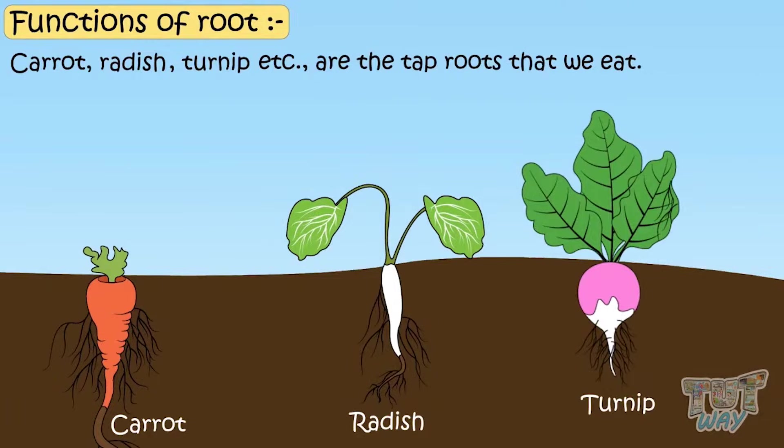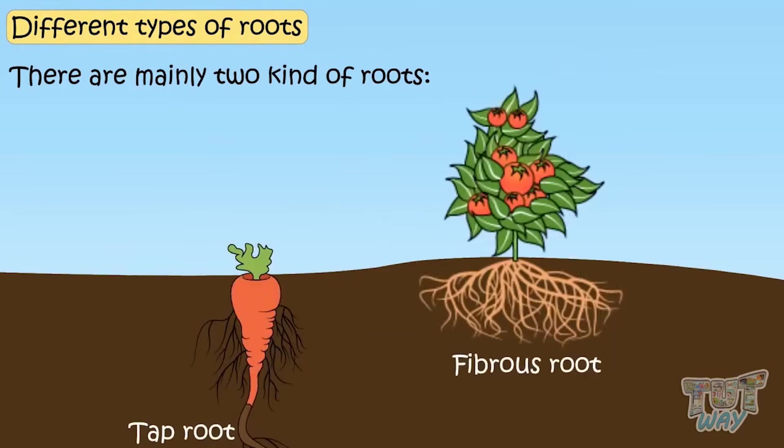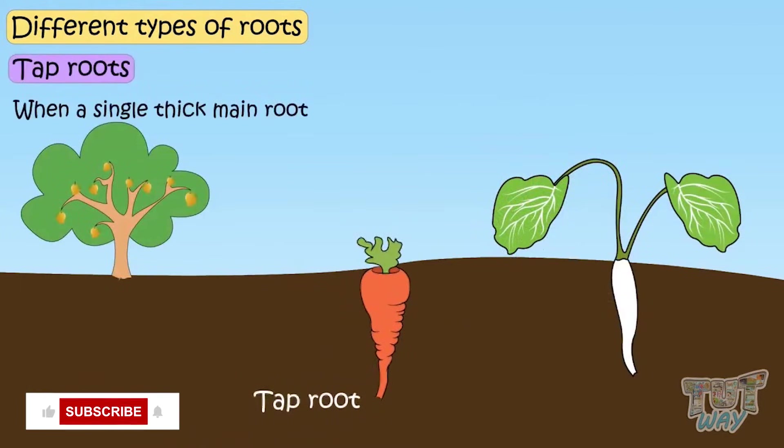Now let's see different types of roots. There are mainly two kinds of roots: tap roots and fibrous roots. When a single thick main root grows below the stem, it is called tap root.